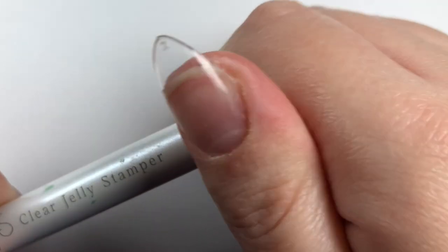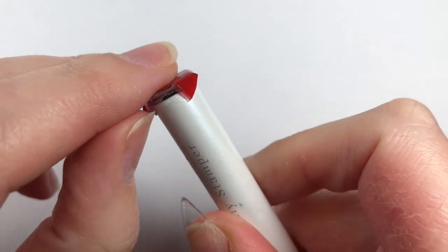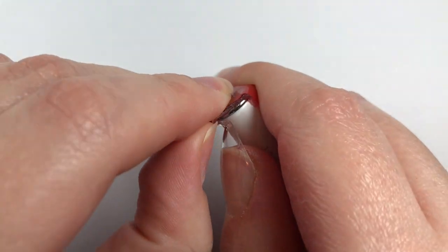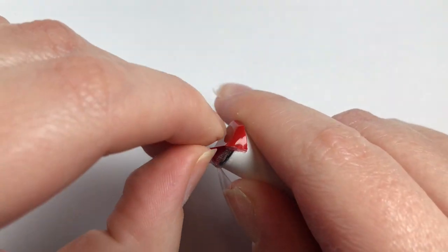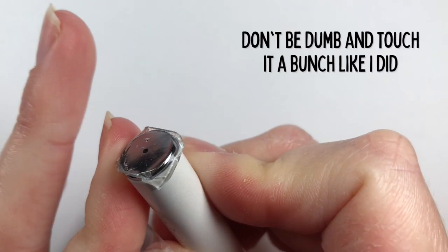So once you got that on there, the hardest part of the entire technique will happen, which is getting this backing paper off of the tape. But once you get there, it's pretty much smooth sailing. So once you have that done, you can just set that aside.